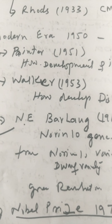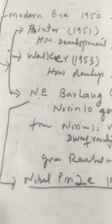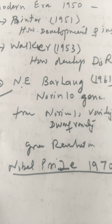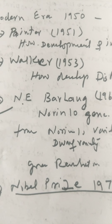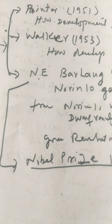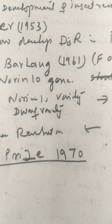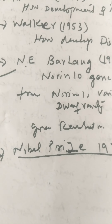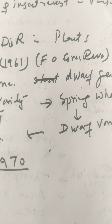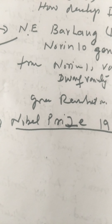The three well-known scientists in the Modern Era are Painter, Walker, and N. E. Borlaug. Painter, in 1951, proposed how to develop insect resistance in plants. Walker, in 1953, described how to develop disease resistance in plants. N. E. Borlaug, spelled V-O-R-L-A-U-G, in 1961, is also known as the Father of the Green Revolution. He used the Norin-10 gene from the dwarf wheat variety Norin-10.